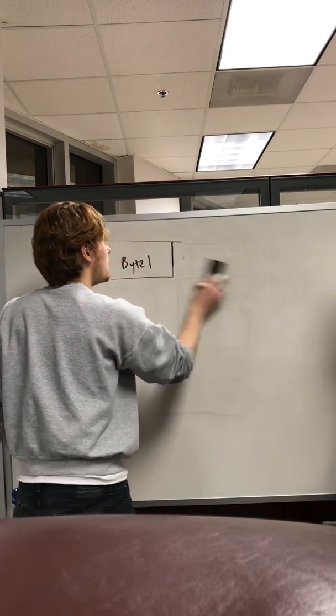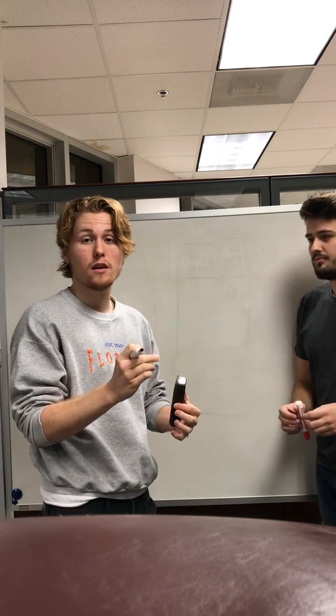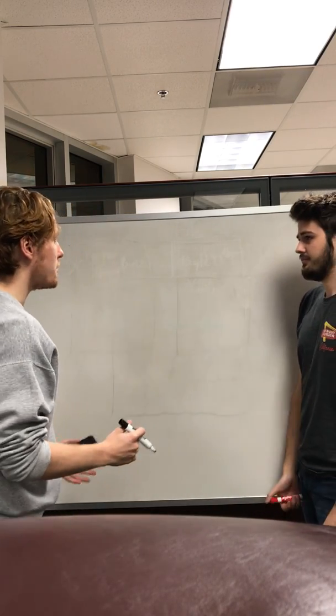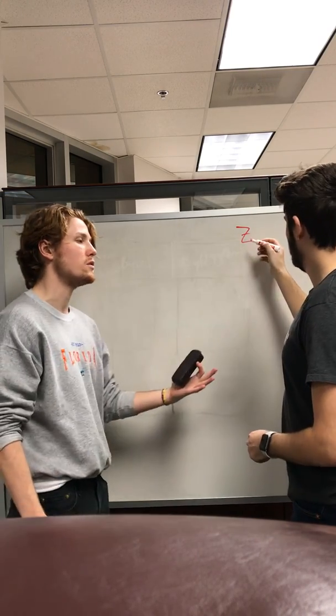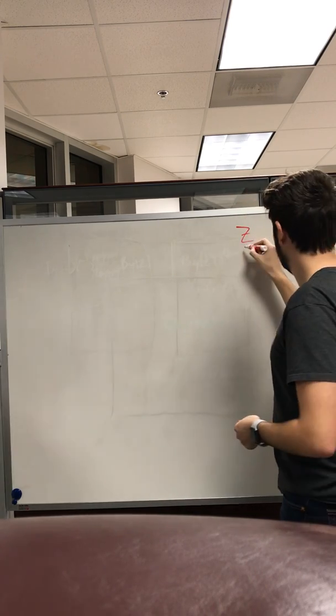Whenever we're accessing a memory location with an instruction in the XMega, we need the pointer to be referencing a specific physical address. Since this video is about loading from program memory, we have to use the Z pointer. We need a specific instruction to load that pointer with the correct address.